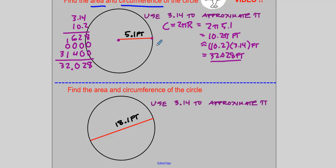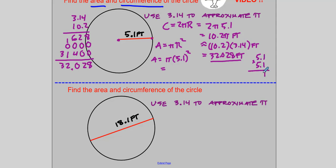Now the area is pi·R squared. So that's A equals pi times 5.1 squared feet squared. I'm going to take 5.1 times 5.1, lining up the rightmost digits: 1 times 1 is 1; 5 times 1 is 5. Add placeholder 0; 1 times 5 is 5; 5 times 5 is 25. Adding up: 1, 10 carry 1, 6, 2 — so that's 26.01. The exact area is 26.01·pi square feet.